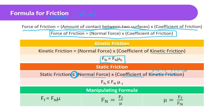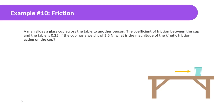Looking at the manipulation of the formula — you could pause the video and copy this down, or if you know the algebra already, that's great. Let's look at this example: a man slides a glass cup across the table to another person. The coefficient of friction between the cup and the table is 0.25. If the cup has a weight of 2.5 newtons, what is the magnitude of the kinetic friction acting on the cup? We're going to draw a free body diagram of this.